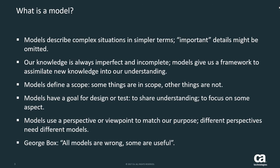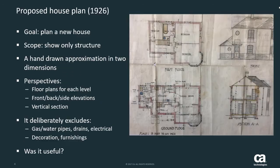If our model is not useful, it's both wrong and useless. So we have this compromise — all models are a compromise — so we have to be careful how we choose ones that are most useful. Here's an example of a model. It's actually a house plan from 1926. The goal, clearly, was to plan a new house.